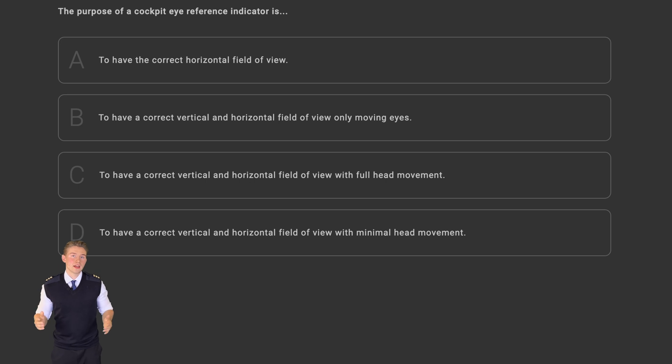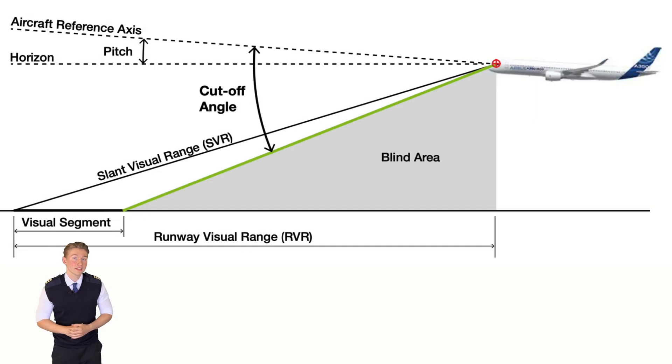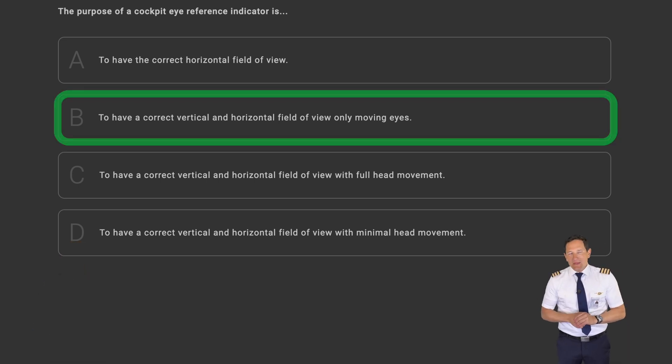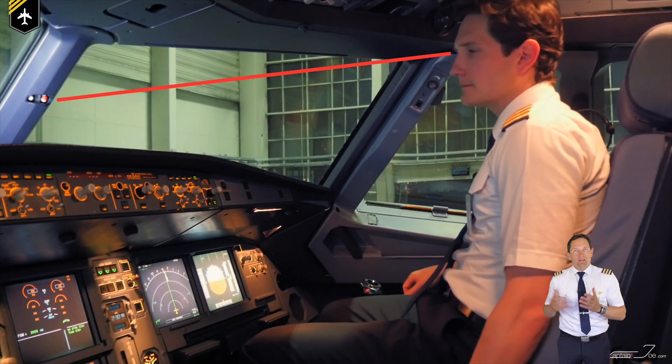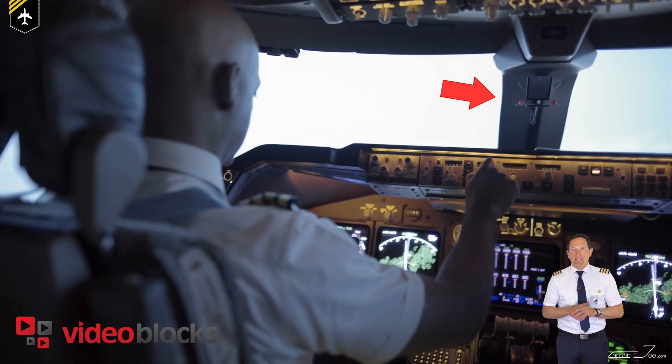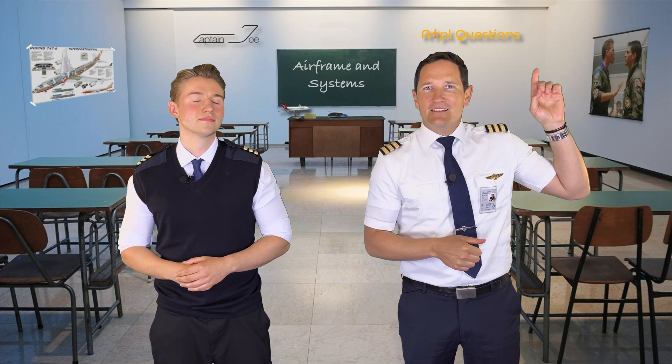As the pilot flying, as long as you are manually flying, your focus is on the outside and the primary flight instruments, as Joe just stated. Meaning you don't have to move your head during the scan, unless you would want to make changes to your autopilot or any other system. But that's the job of your pilot monitoring. Well said Fabian, so answer B is correct. I actually made an entire video on that topic, so we advise you to watch it to get a better understanding of the eye reference indicator.